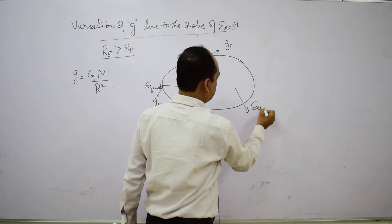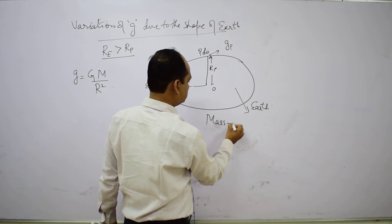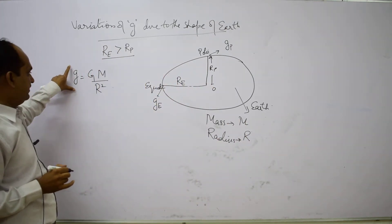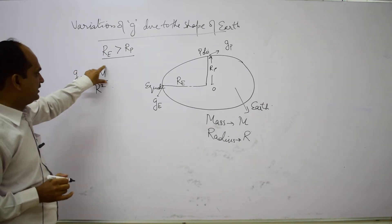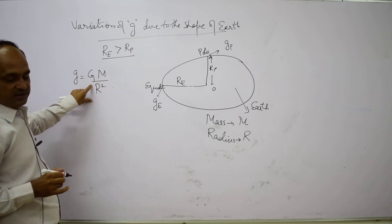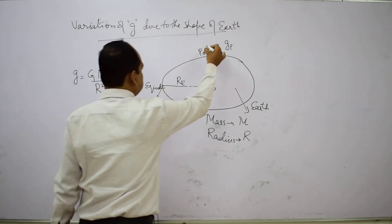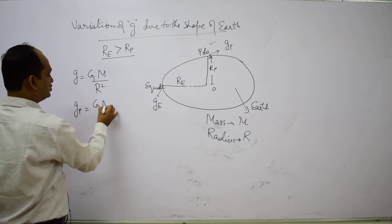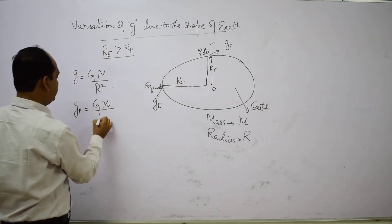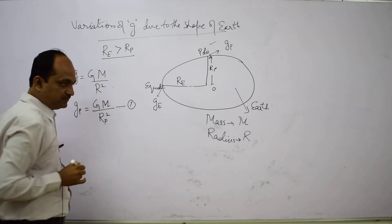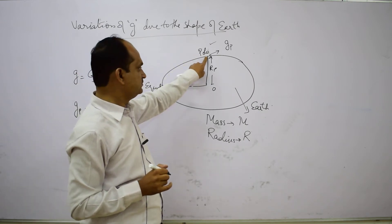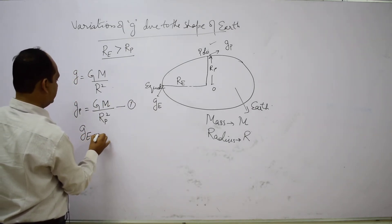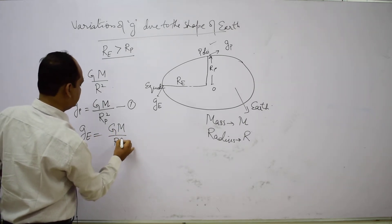Using the relation small g equals capital G times M upon R square (where M and R are Earth's mass and radius), we write the value at poles as: g_P equals G times M upon R_P square — equation 1. Similarly, the value at the equator is: g_E equals G times M upon R_E square — equation 2.